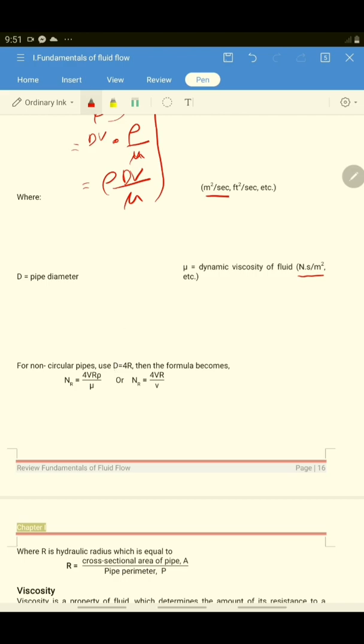For the diameter, this is equal to 4R for a non-circular pipe. So from the Reynolds number formula, substitute the value of R. So you have Nr is equal to 4R.